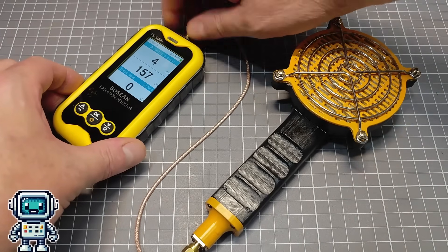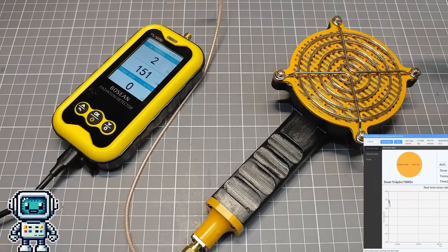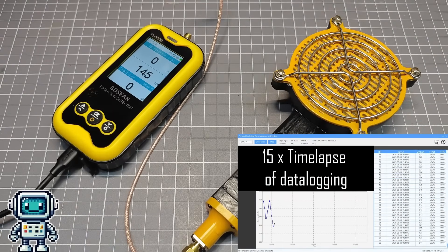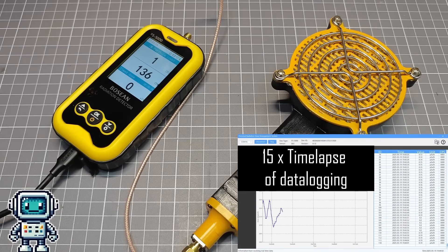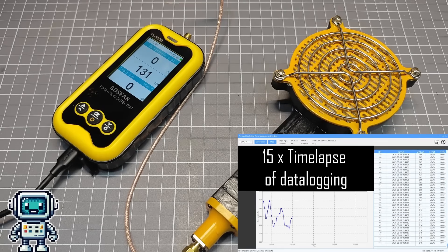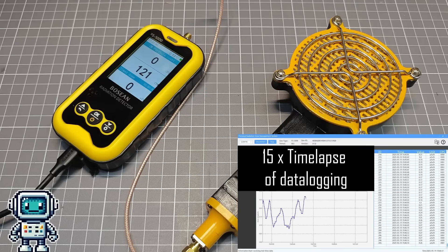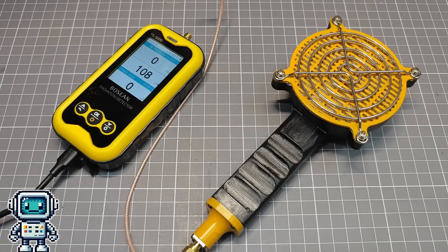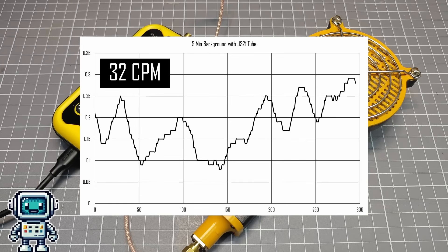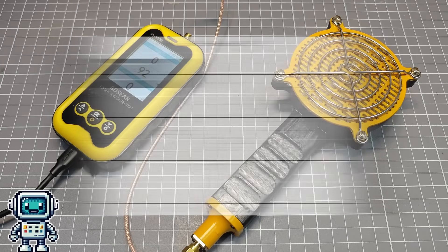First we are going to run a 5 minute test using the internal GM tube, it is always useful to have a baseline. Here in this apartment in Shenzhen China, we are expecting a dose rate of around 15 microsieverts per hour of background radiation. With the calibration that this device applies, that roughly translates to about 30 counts per minute. In the end, we get an average over 5 minutes of 32 counts per minute, so pretty close to the expected value. So far, so good.